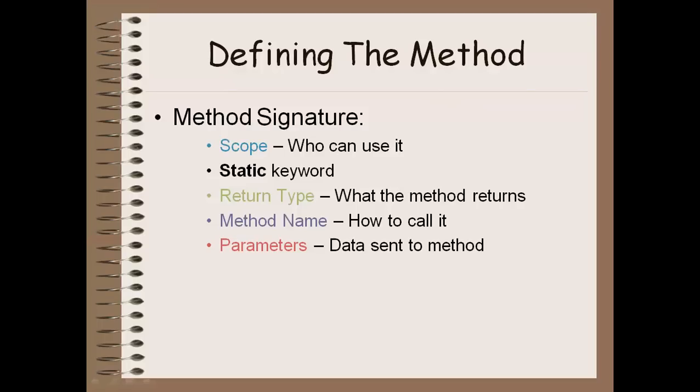You have the method name, which is essentially the name of the method and what we're going to use to call the method or run it. And then we have the parameters, the data that's going to be required to be sent when you use it.